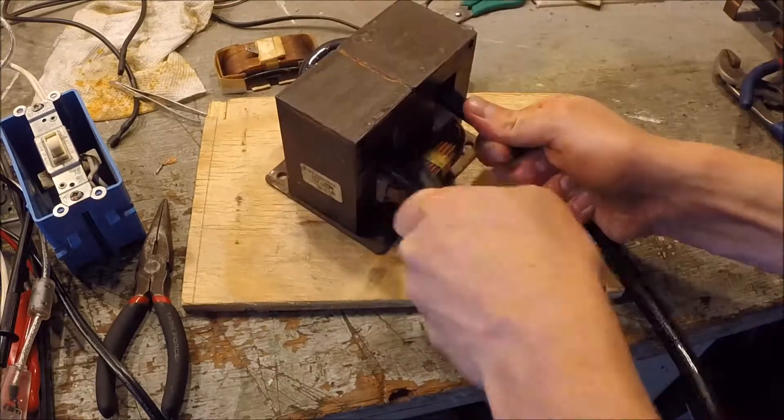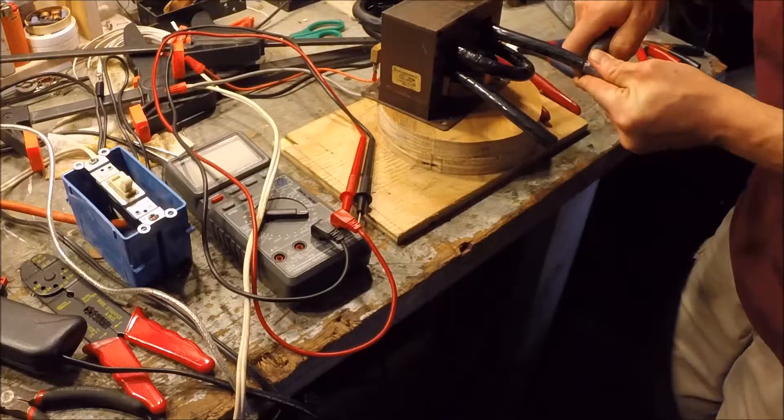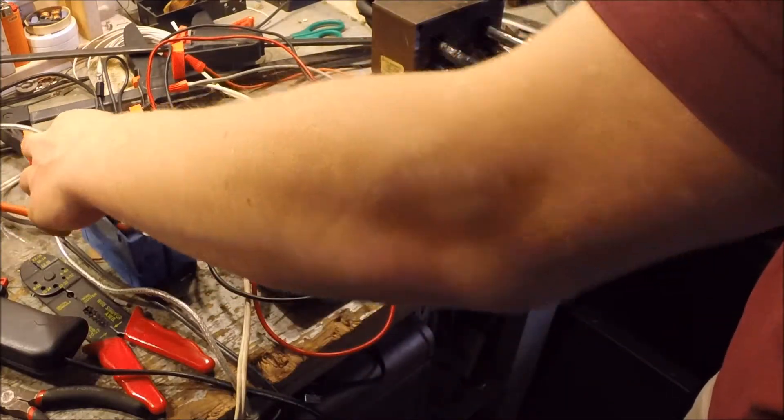Next I wound a new secondary coil which consisted of 2 turns of 2 watt copper wire. When I finished I stripped the insulation off the ends and it was time to try it out.